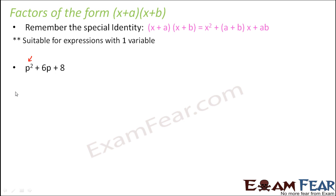But in this case, if you look at it more closely, it fits into this format. So p² plus this 6 can be written as 4 plus 2, p, and 8 can be written as 4 into 2, right? That is, this is the same format: x² + (a+b)x + ab.